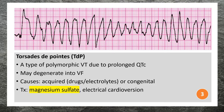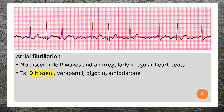The most common causes of acquired QT prolongation are drugs such as antiarrhythmic agents, antibiotics, antipsychotics, and antidepressants. Other causes include electrolyte imbalances such as hypokalemia and hypomagnesemia, and genetic mutations. Treatment of torsades de pointes includes magnesium sulfate or electrical cardioversion.